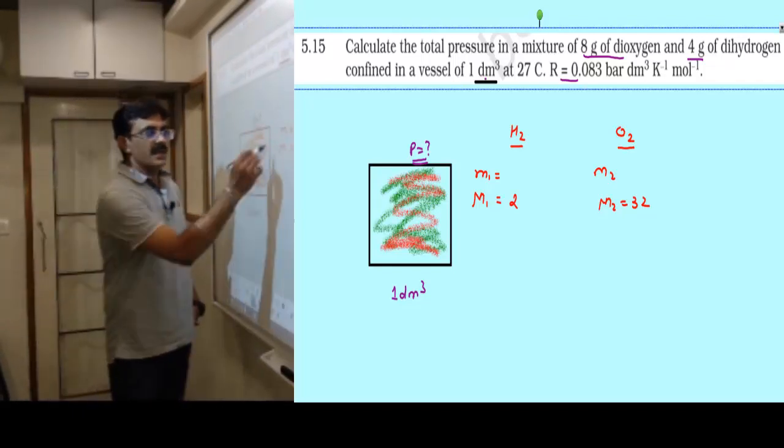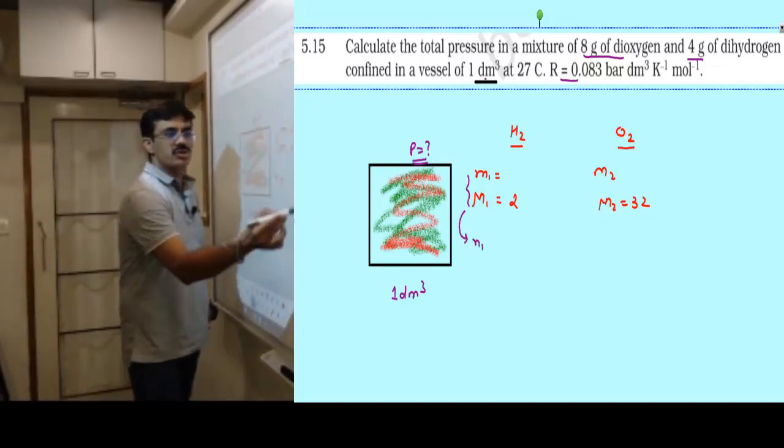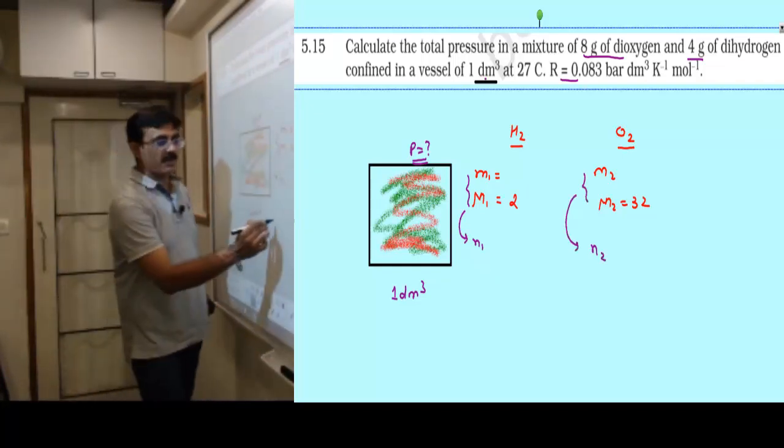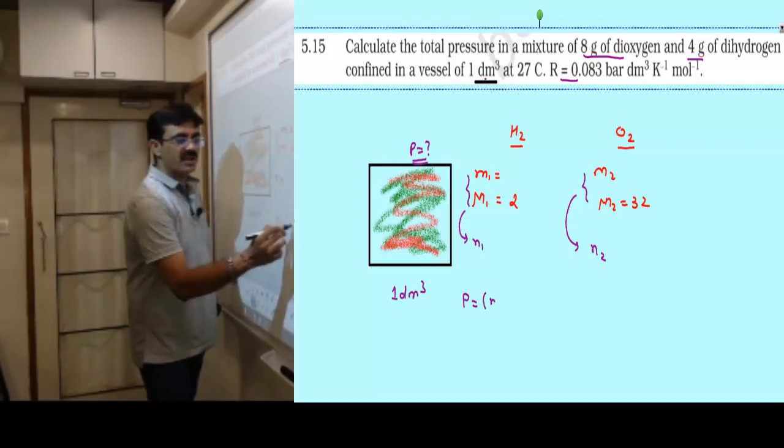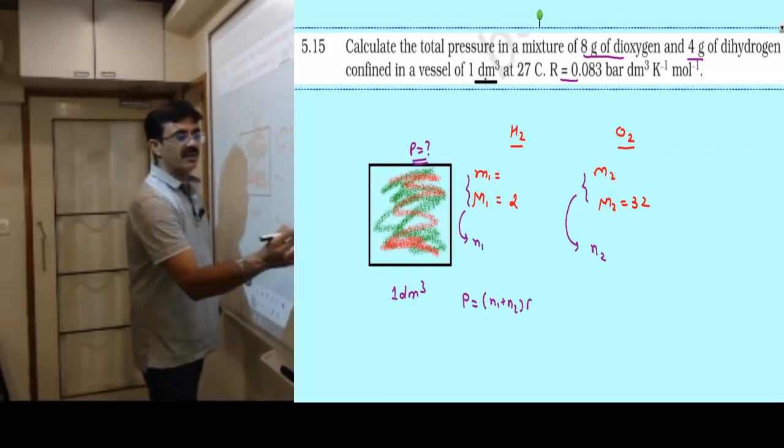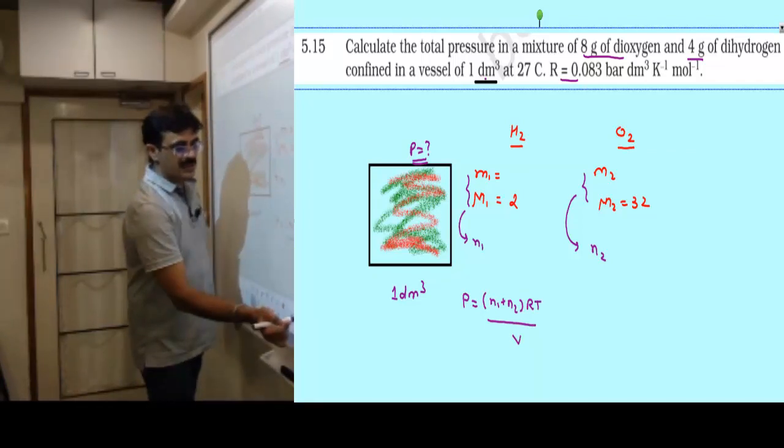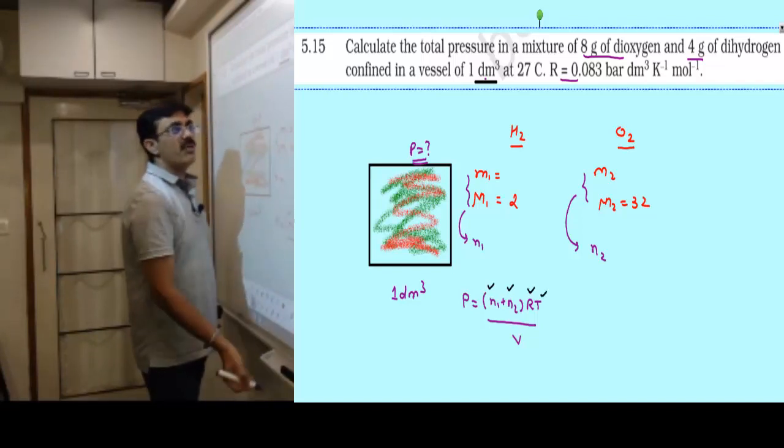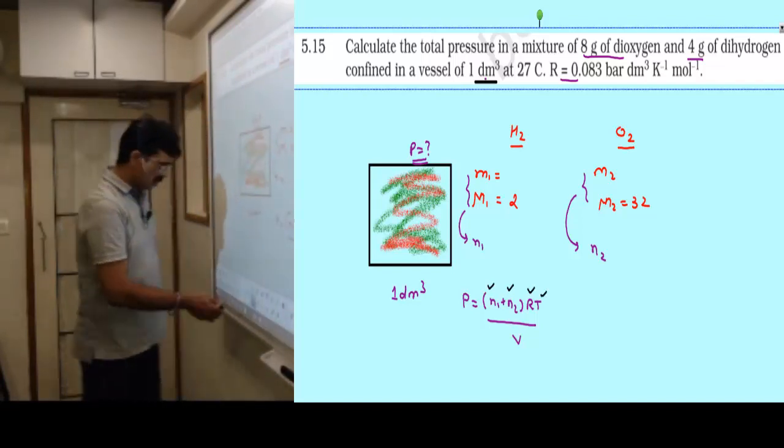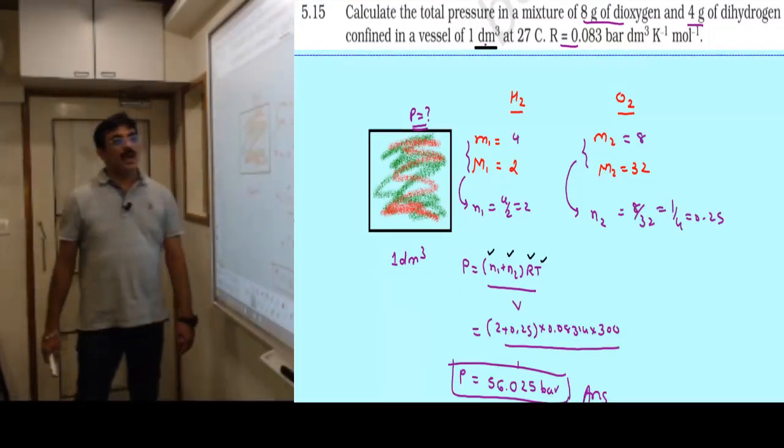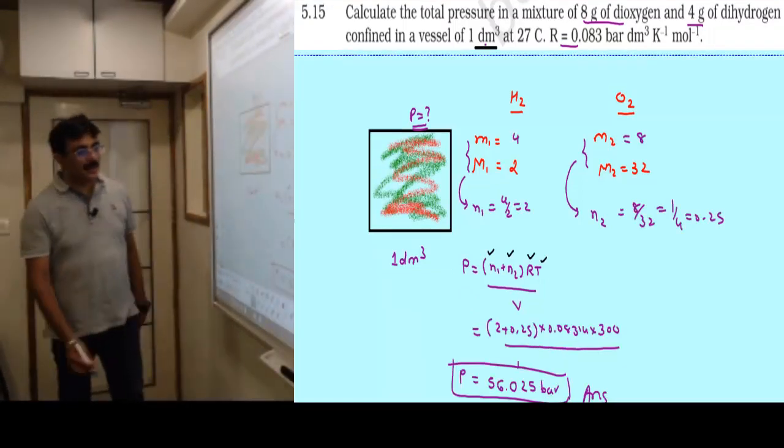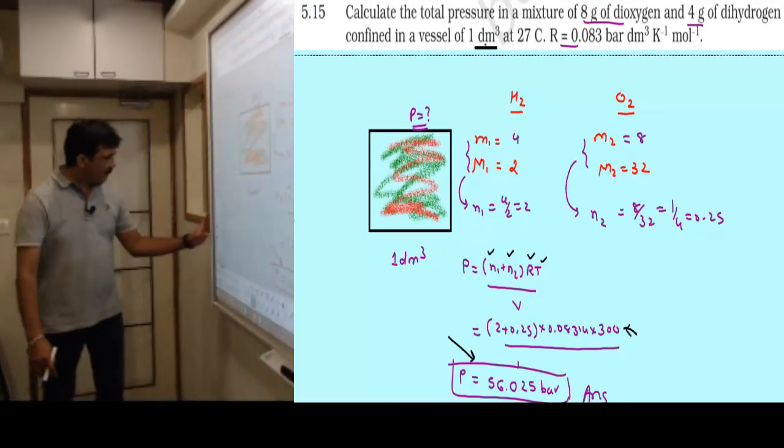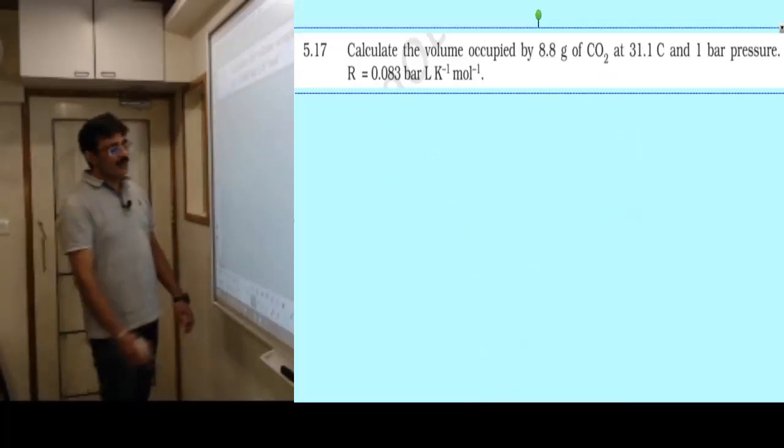You need to find final pressure. If you put two gases together, then p equals n1 plus n2 times RT by V. You will get n1, you will get n2, r is known, temperature is given, volume is given. What remains to find? Solve it. If you solved it, answer should be 56.025 bar. If you don't want to put values, please stop here for 2 minutes and check.